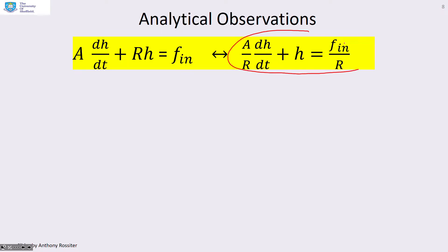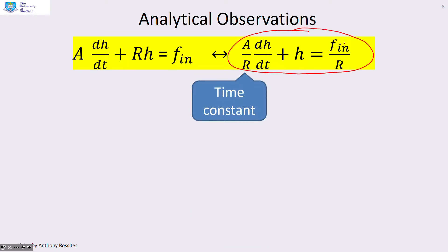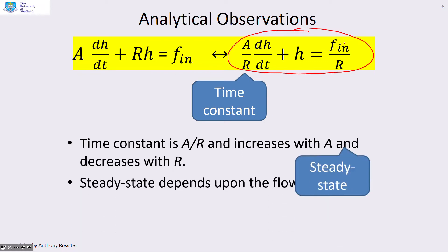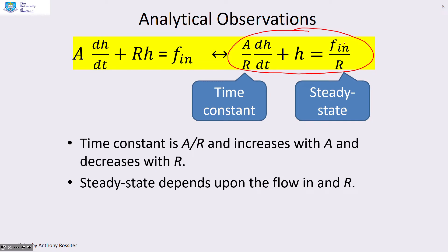Now for some mathematical observations. Rearranging the equation into standard time constant form, you can see the time constant equals A over R — so it gets bigger as A increases and smaller as R increases, which reinforces what we saw in the simulations. The steady state is given as flow in divided by R: as you increase R the steady state gets smaller, but as you increase flow in the steady state gets bigger.